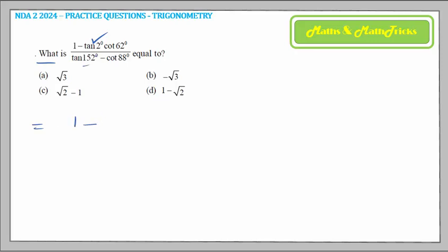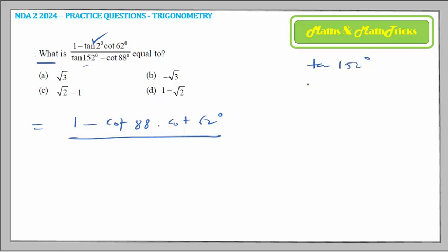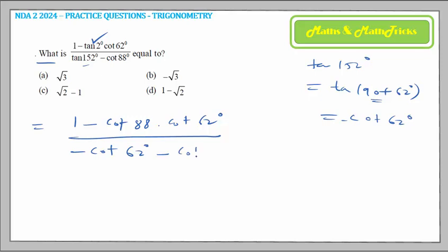tan 2° equals cot 88° because 88 + 2 = 90, so 2° and 88° are complementary — tan 2° equals the complementary ratio cot 88°. Then tan 152° can be written as tan(90° + 62°), which is in the second quadrant where tan is negative, giving minus cot 62°. So the denominator becomes minus cot 62° minus cot 88°, and we take the minus sign common.